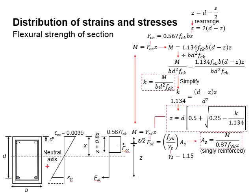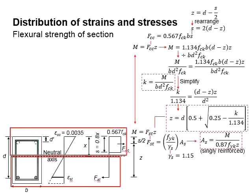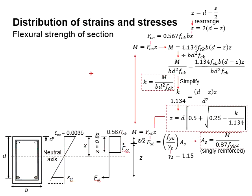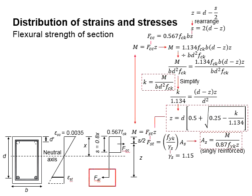Under bending, the bottom part of the section undergoes tensile stress while the top part undergoes compressive stress. This gives us a neutral axis which separates the tension and compression regions. Compressive stress is developed within the compressive region, while no stress is developed in the tension region for the concrete. The concrete is assumed not to contribute any tensile stress; tensile stress is fully contributed by the reinforcement bar embedded within the section.